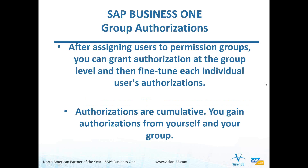After you assign those users to the groups, you can, if you want, go and fine tune the individuals and give them more permissions. The reason you can do that is because authorizations are cumulative. So you define what the group can do, and then you can go and define additional things that the individual can do. Notice that they're cumulative, not restrictive. That means as you assign authorizations, they pick up those additional things that they can do. It will not pick up additional restrictions from the individuals or the group — it's always cumulative, not restrictive.